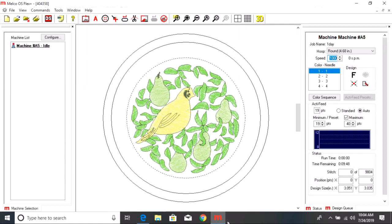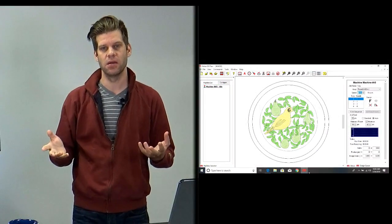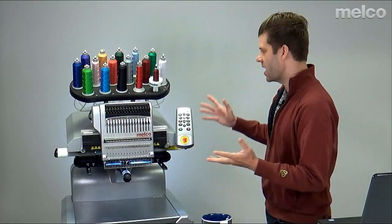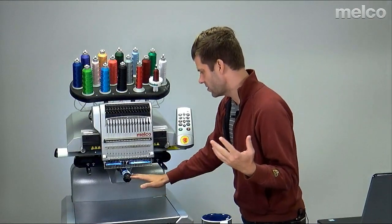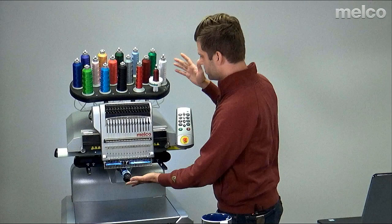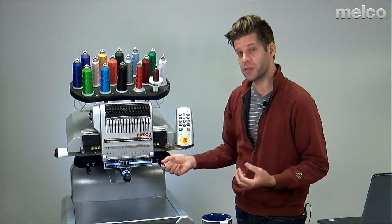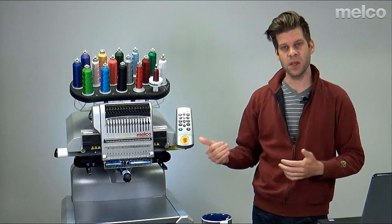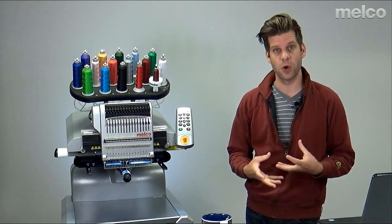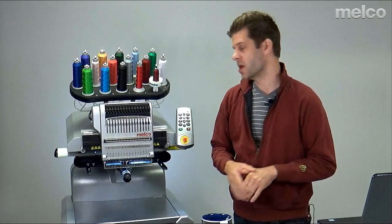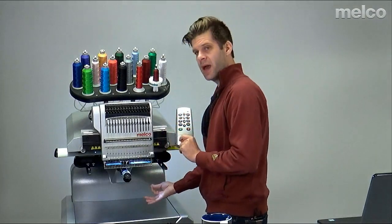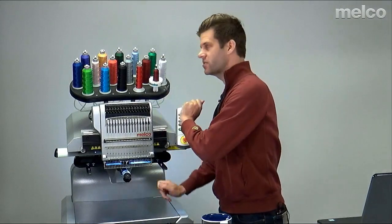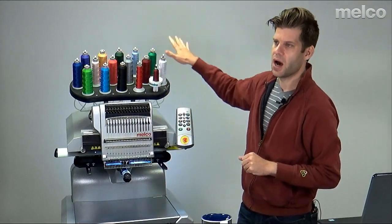So to start, what I typically do when I get a thread break, is I will look at the overall thread path. And the first thread break, I'll probably just re-thread and hit go. The second one, that's when I start to get a little more irritated and start to look a little more in depth at what's going on.